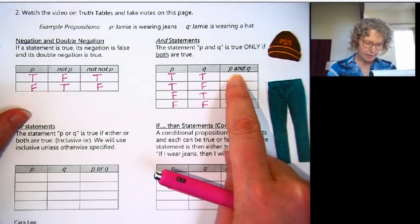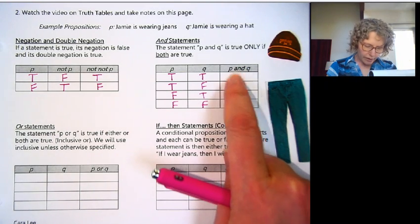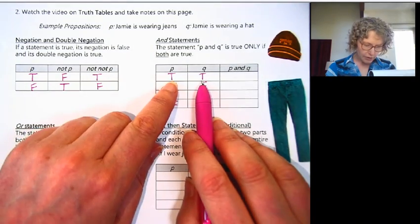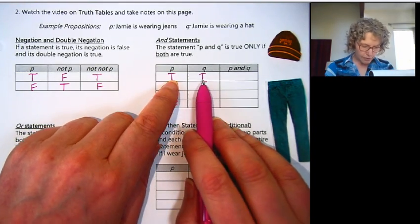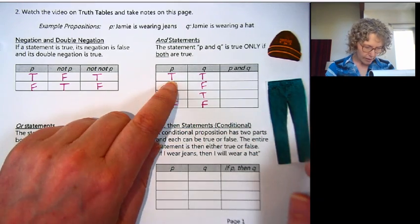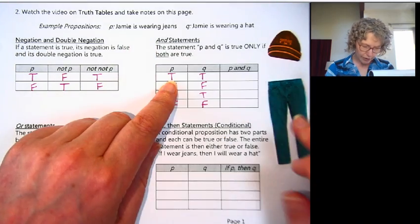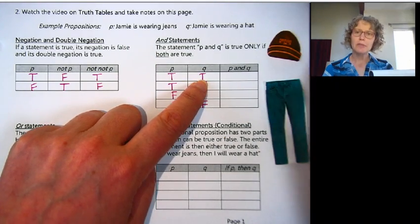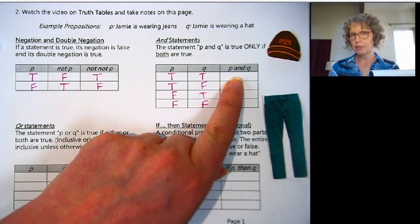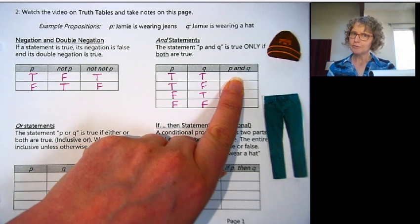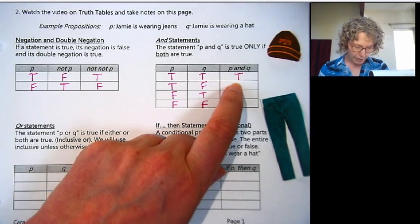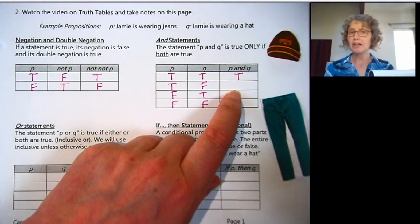Now we're combining these two propositions with an AND. So we're making a larger statement. We're going to do each row individually. In the first row, P is true and Q is true. P is true, so Jamie is wearing jeans, and Q is true, so Jamie is wearing a hat. So P AND Q would be Jamie is wearing jeans and a hat. Is that true? Yes, that's true. Jamie is wearing both—they are wearing jeans and a hat.